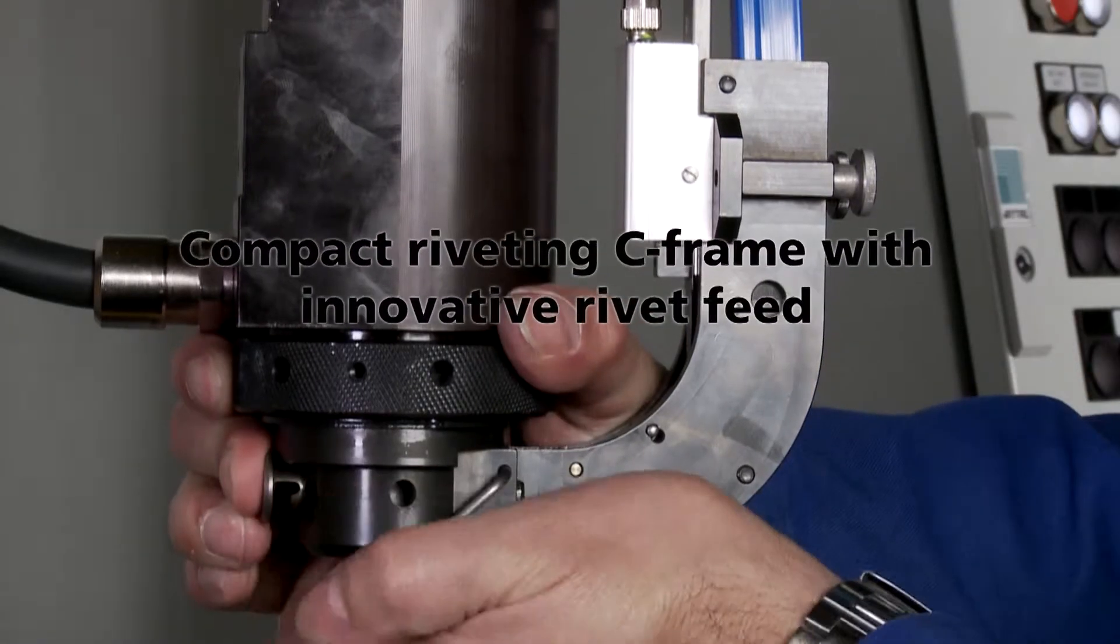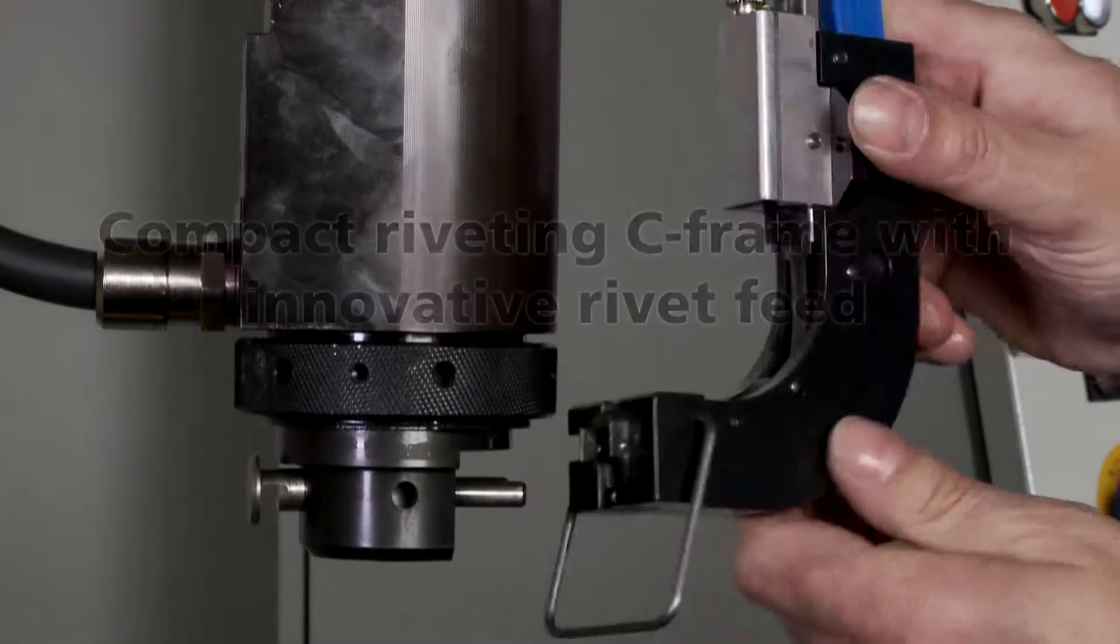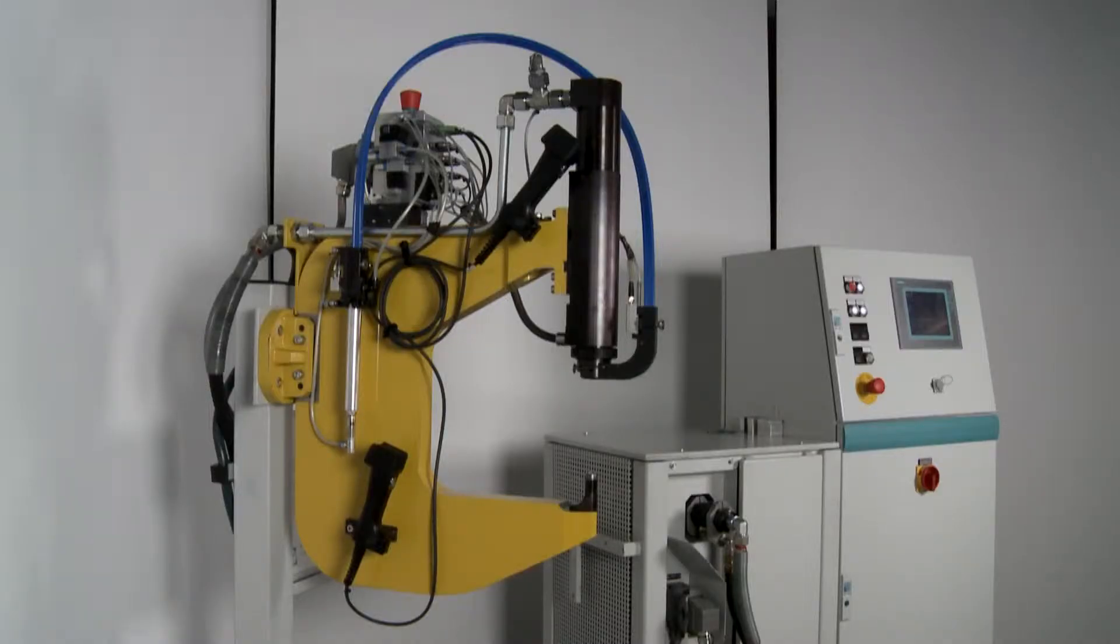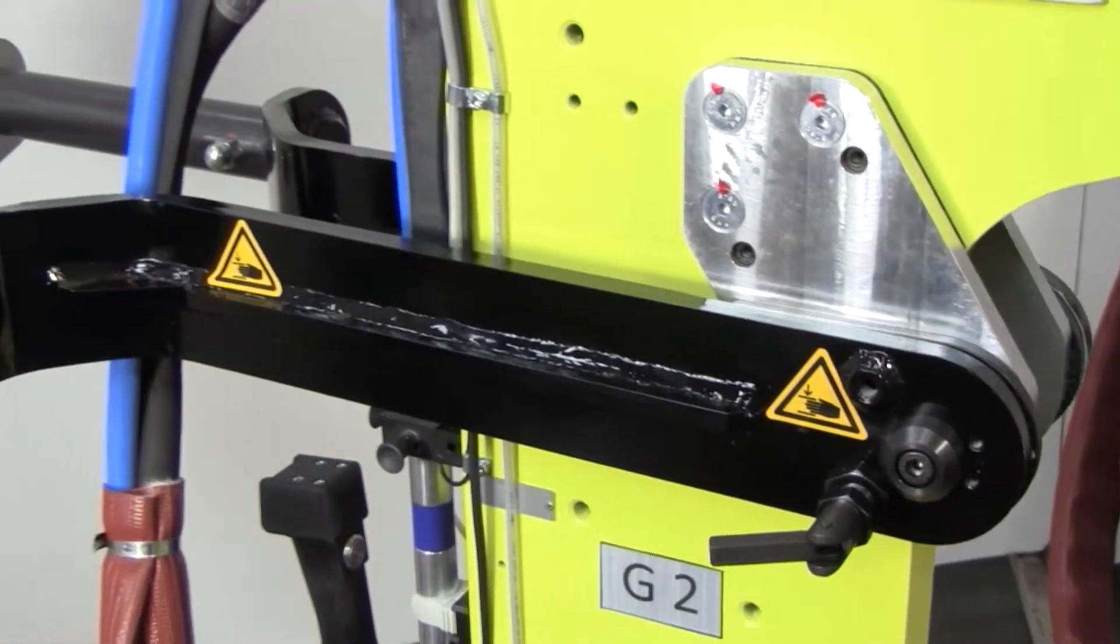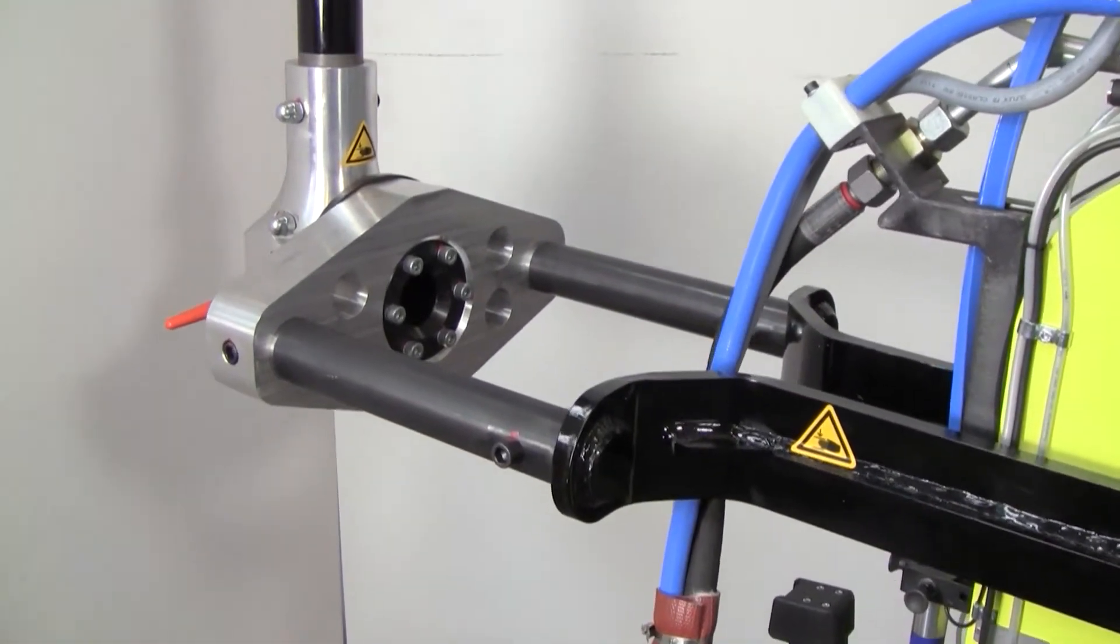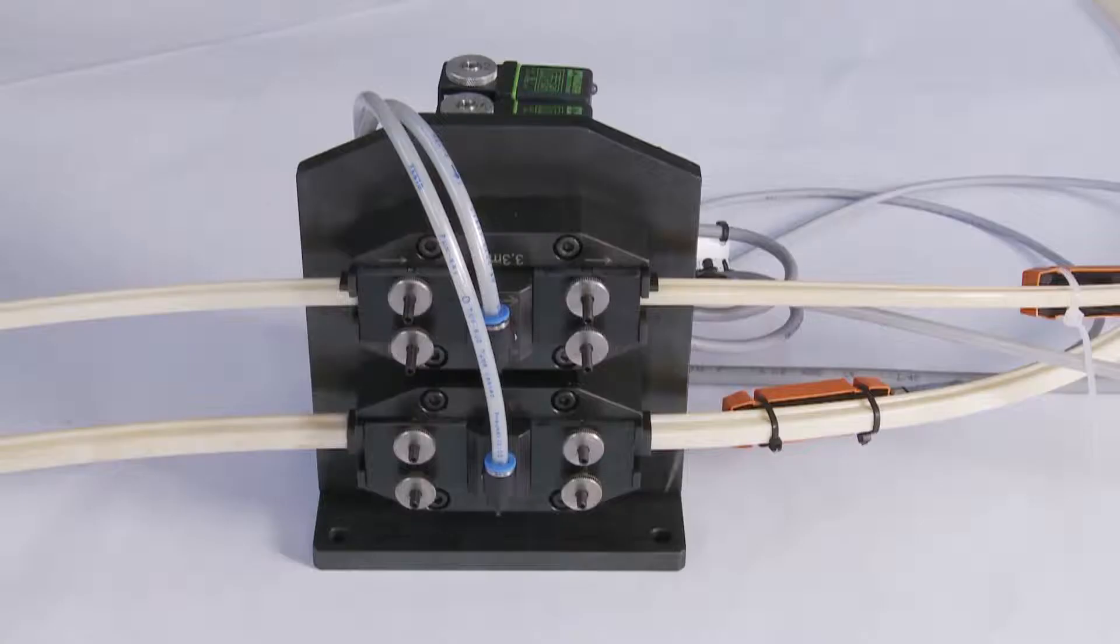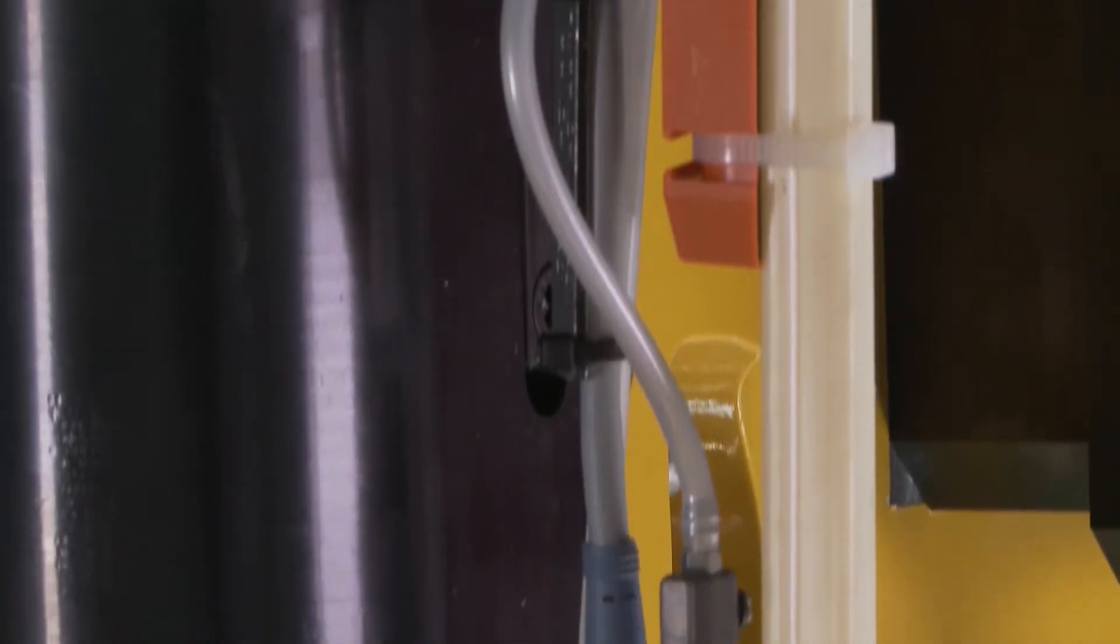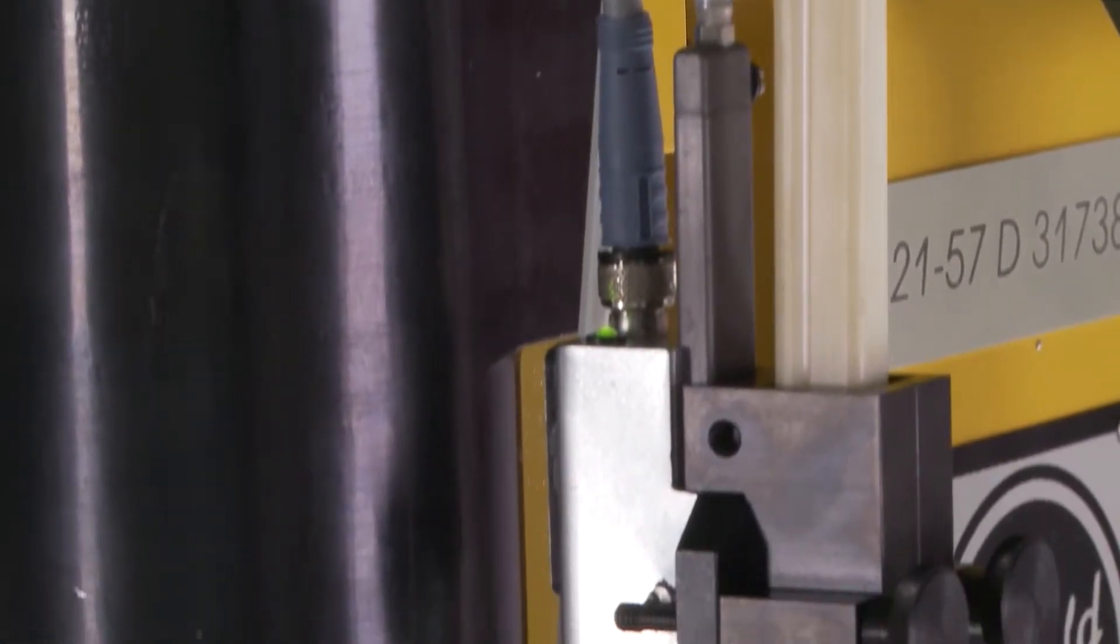One of the key features of the compact riveting C-frame is the innovative rivet feed mechanism. The C-shaped frame is mounted in a rotating and swiveling device. By using a rivet feed hose, the rivets can be fed to automated self-piercing riveting systems over longer distances.